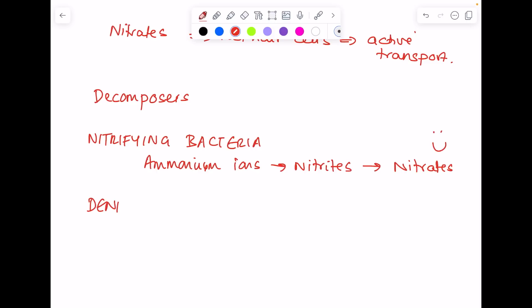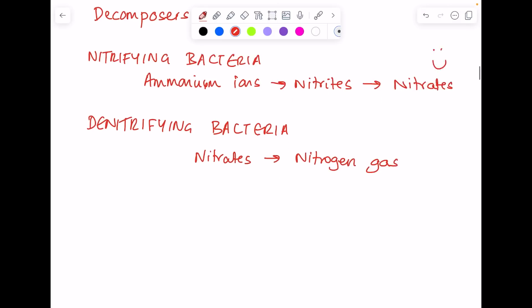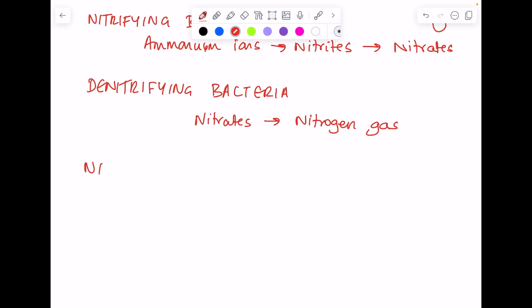Denitrifying bacteria are super annoying because they do the opposite role. They convert nitrates to nitrogen gas, which is super annoying because nitrogen gas is inert.